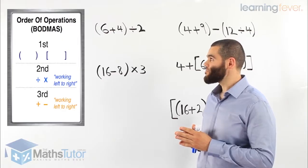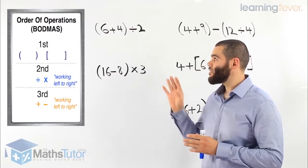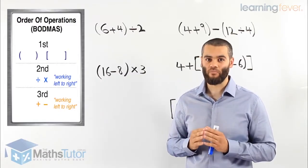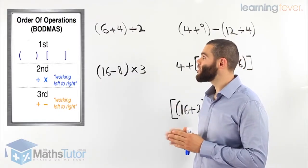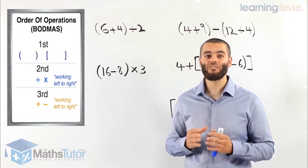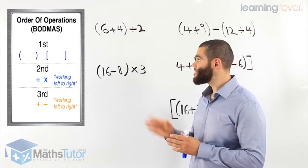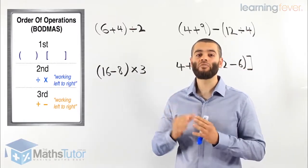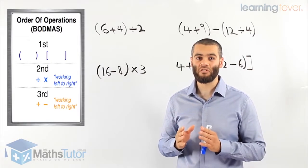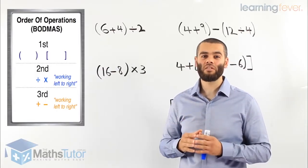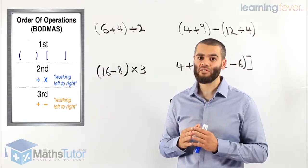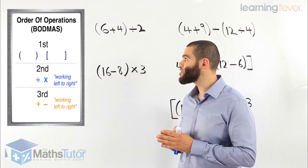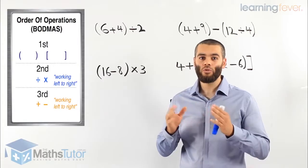Looking at here, we can see that the order of operations has certain steps — actually three steps that we have to follow. First, we have to look for what we call the brackets or the parenthesis. In a number sentence, if we see brackets or parenthesis, we have to complete them first. That is the first stage. Once we complete the brackets, then we move on and look for a multiplication or a division. We do that second.